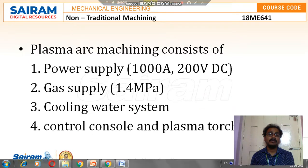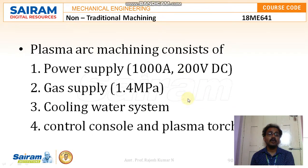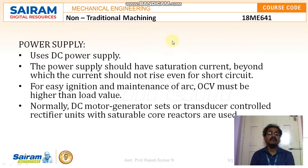Plasma arc machining consists of four major components: a power supply of 1,000 amperes at 200 volts direct current, a gas supply at 1.4 MPa, a cooling water system, a control console, and a plasma torch. The power supply uses direct current and must have a saturation current beyond which current should not rise even during short circuit. For easy ignition and maintenance of the arc, the open circuit voltage must be higher than the load value. Normally, DC motor-generator sets or transducer-controlled rectifier units with saturable core reactors are used.